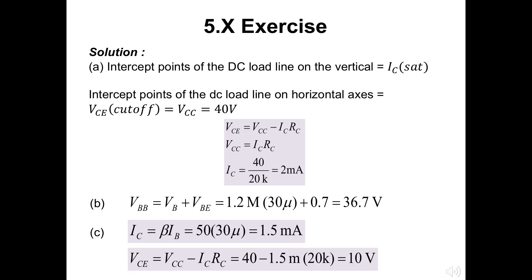In the previous slide, we understand that intercept point of the vertical axis is reflected to IC(SAT), while the intercept point with horizontal axis is the VCE cutoff or the VCC. So we need to find the IC. As the VCE is VCC minus voltage with RC, here we will have IC is 2 milliampere. VBB can be calculated with VB plus VBE which is 36.7 volts. IC can be gained from the beta ratio with the IB as 1.5 milliampere. Finally, for VCE is 10 volts.